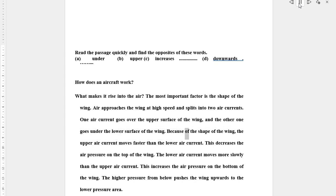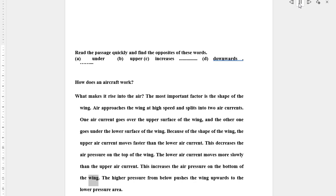Because of the shape of the wing, the upper air current moves faster than the lower air current. This decreases the air pressure on the top of the wing. The lower air current moves more slowly than the upper air current. The higher pressure from below pushes the wing upwards to the lower pressure area.